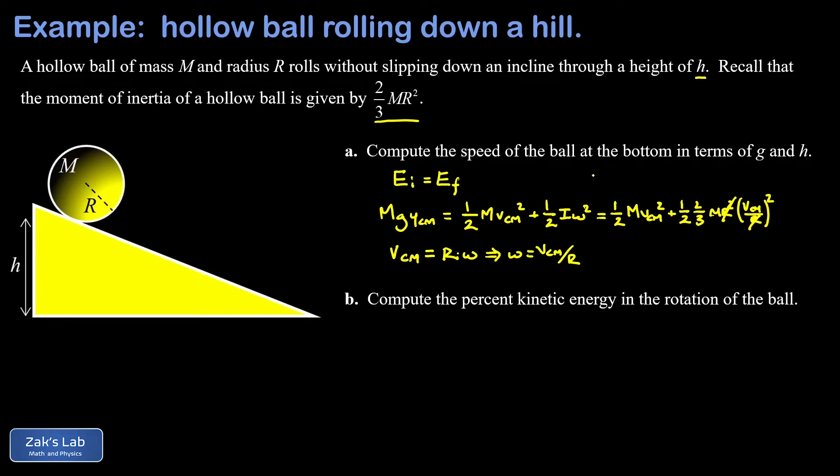Also, if I go all the way back to the left-hand side of this equation, I see that my ms cancel out. In other words, the speed at the bottom is going to be independent of the mass of the ball. So what we have remaining on the left-hand side is g times the initial center of mass y-coordinate, which remember, we can just call h.